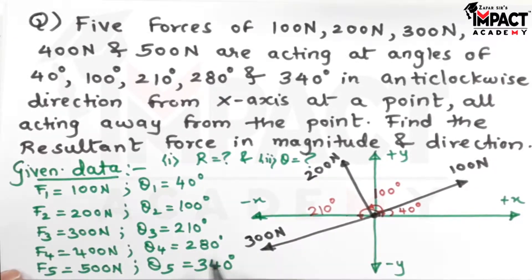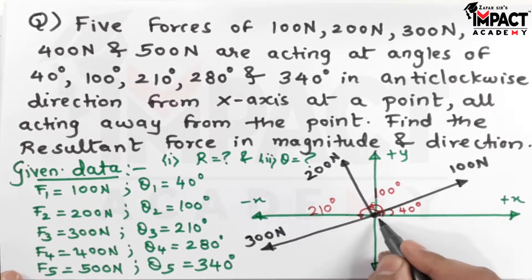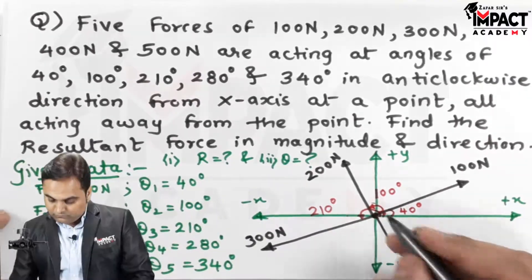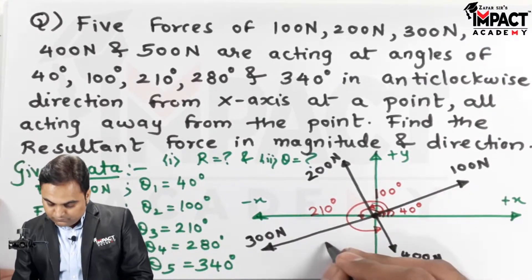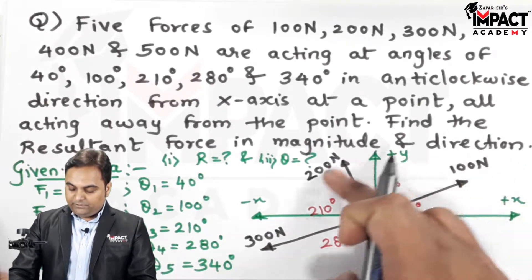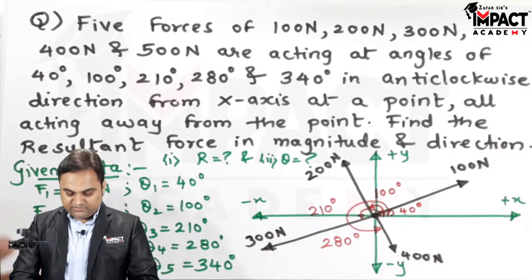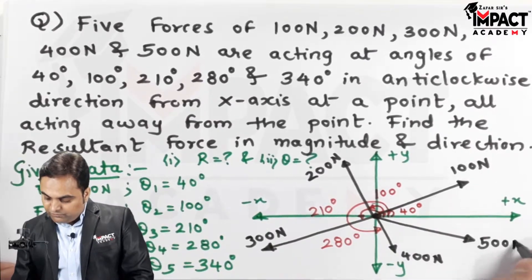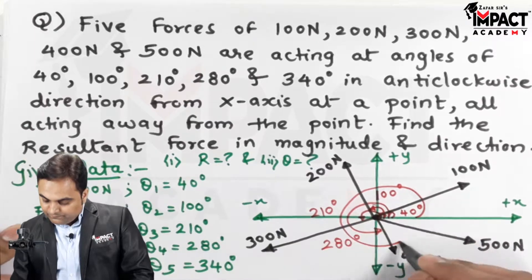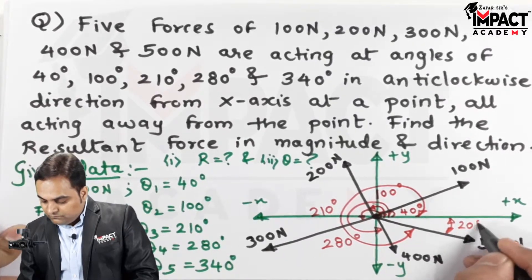The 400 N force is at 280°. The quadrants span 90° each: 90° (first), 180° (second), 270° (third), so 10° further gives 280°. Finally, the 500 N force is at 340° — leaving just 20° from the positive x-axis, measured in the anti-clockwise sense, giving the location of the fifth force.